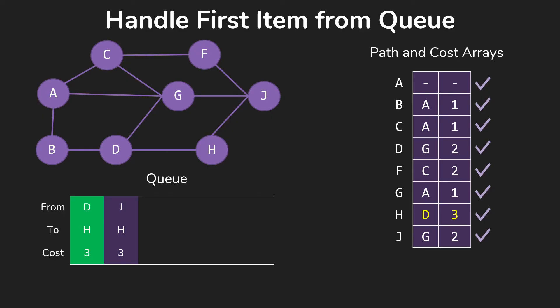We move on to H, which gives us our last path. At this point we want to stop without checking all the edges out of H, because we know we already have a path to everything. We know the paths we already have are better than any future paths we might find, because our breadth-first search process guarantees that — we find all the things one away first, then two away, then three away, and so on.